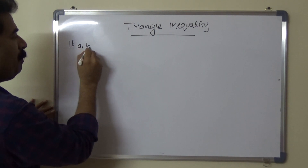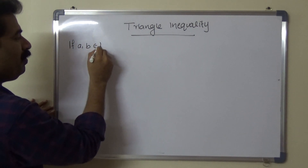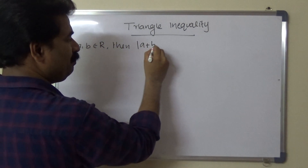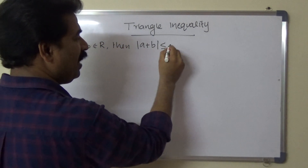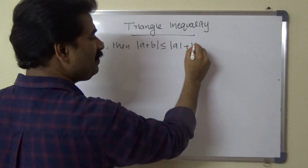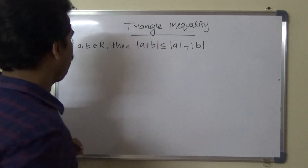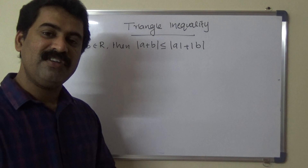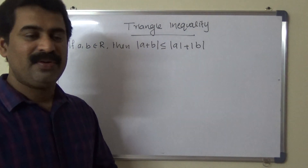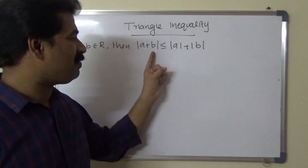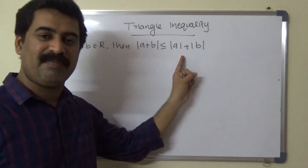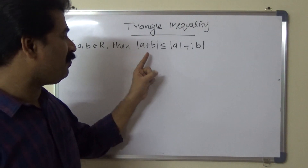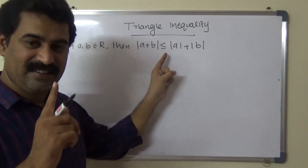The statement is: if a, b belong to ℝ, then |a + b| ≤ |a| + |b|. That is, a, b are any two real numbers, and we want to prove that the modulus of the sum of two real numbers is less than or equal to the sum of the moduli of the two real numbers.